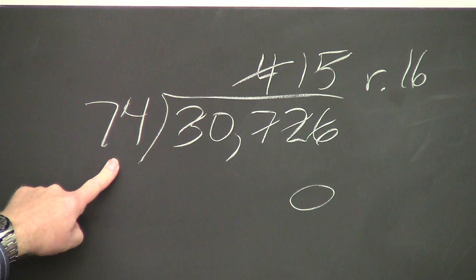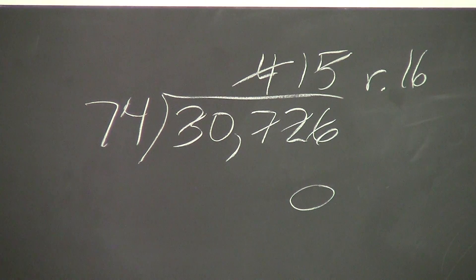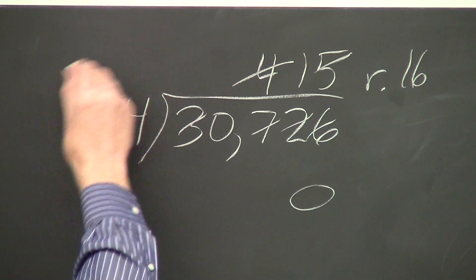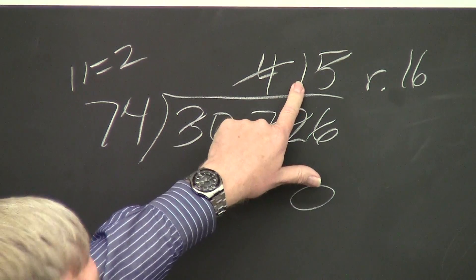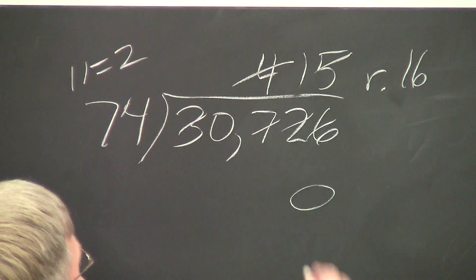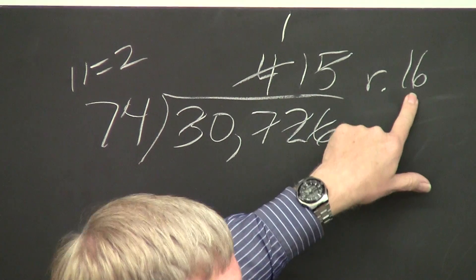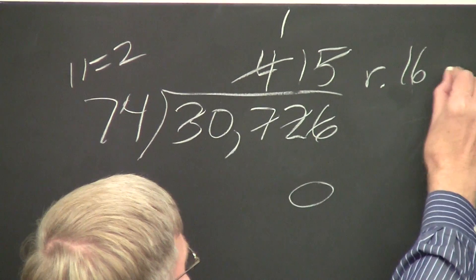Right here we have seven plus four, which is eleven. One plus one is two. Here we have a one. And here we have six plus one is seven.